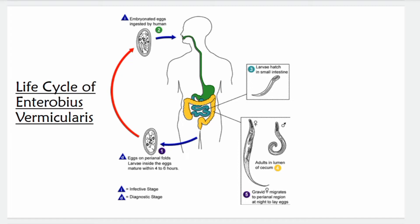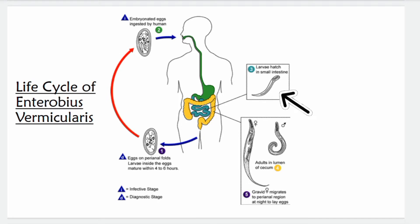Diagrammatic representation of the life cycle: eggs are present on perianal folds and the larvae inside begin developing — the egg becomes embryonated within four to six hours. When these embryonated eggs are ingested by humans, the cycle repeats. The eggs travel to the small intestine where larvae hatch out, then mature into adult male and female, both migrating to the colon to live. Adults reside in the lumen of the cecum. The gravid female migrates to the perianal region at night and lays eggs. This nighttime egg-laying causes severe itching, so patients with enterobiasis may feel itching at night.